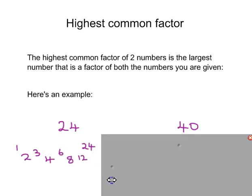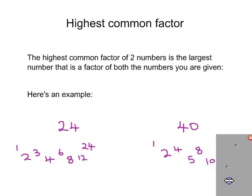I start out by listing out the factors of the first number. So these are all the numbers that have 24 in their times table. I then do the same thing for the second number.